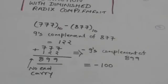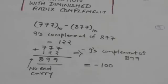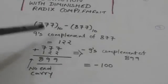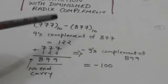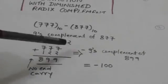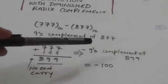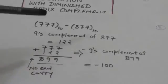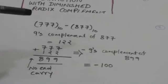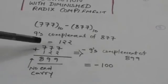Now there are two decimal numbers 777 and 877, and we have to subtract 877 from 777. The first step is to find the 9's complement of 877, which is 122. Now add this 9's complement of 877 to 777.